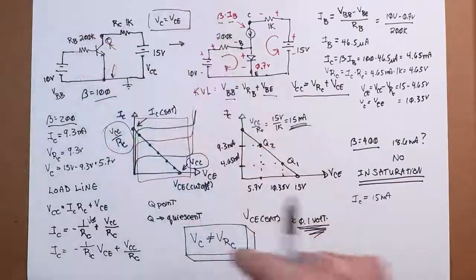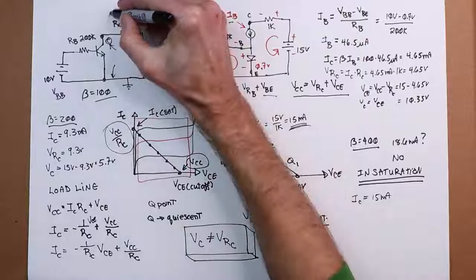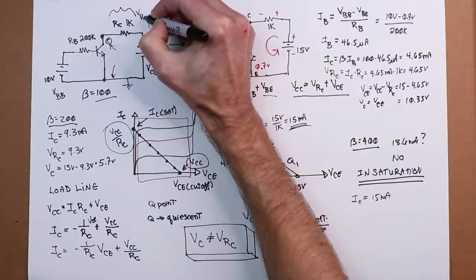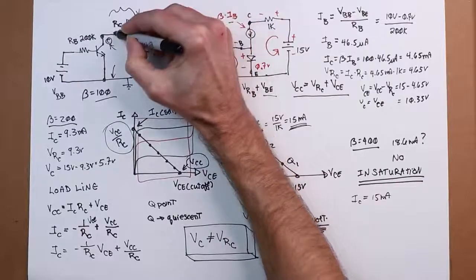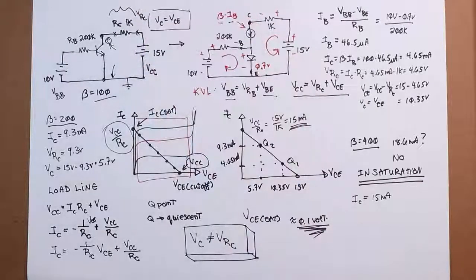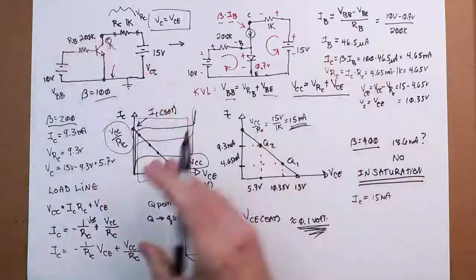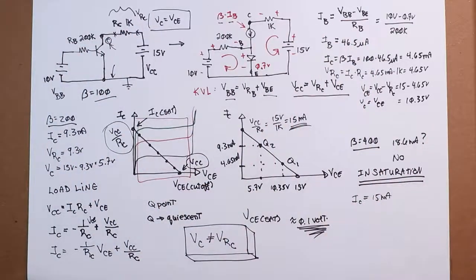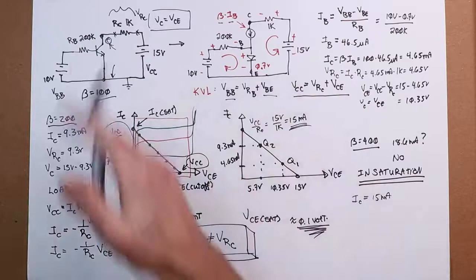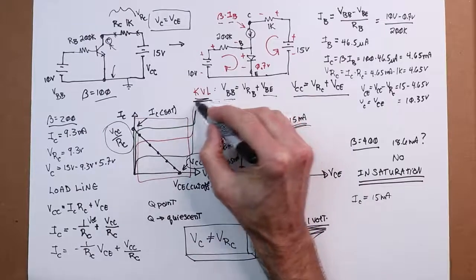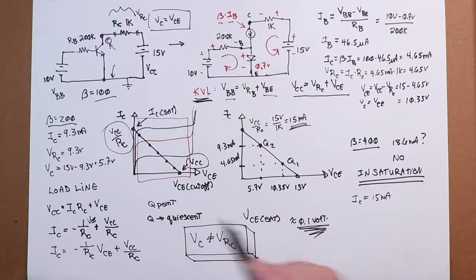Again, variations from circuit to circuit. Do not try to memorize formulas for all these different circuits we're going to look at. It's always going to work back to Ohm's law, KVL, and sometimes we'll piggyback on KCL as well. But those are the keys right there.